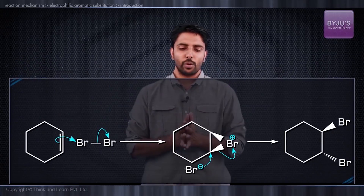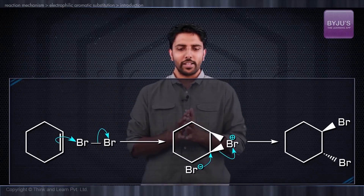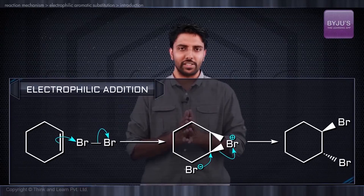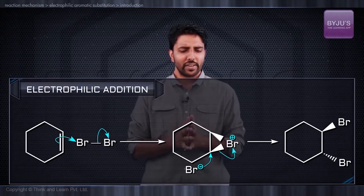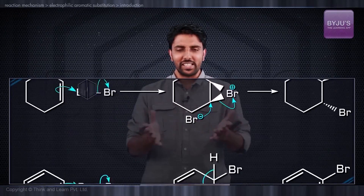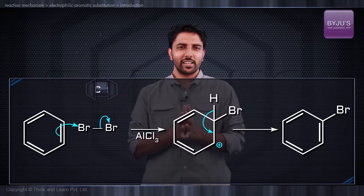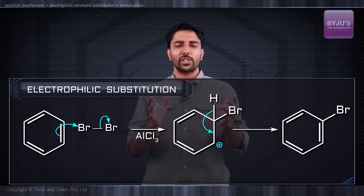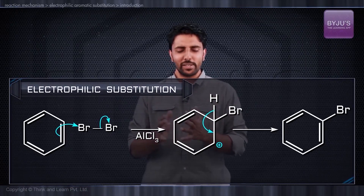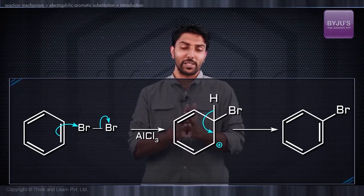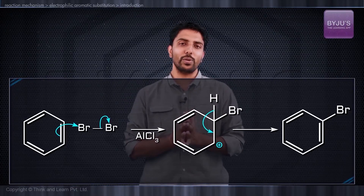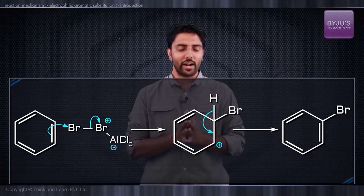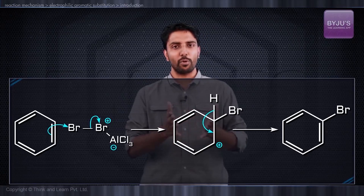In the electrophilic addition, we see that the neutral electrophile bromine alone is sufficient. However, if we try the same reaction with benzene, we see that the bromine molecule has no effect at all. We can only persuade the benzene molecule to react with bromine in the presence of a suitable Lewis acid, like anhydrous AlCl₃ or anhydrous ferric bromide.